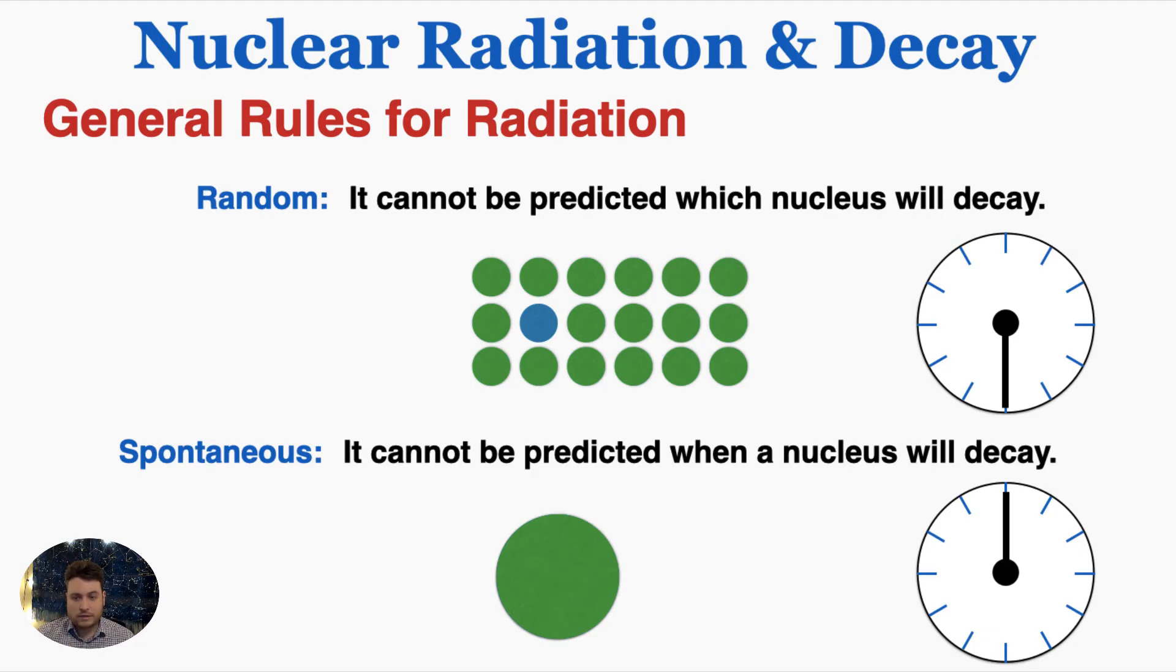Similarly, it can't be predicted when a nucleus will decay. If we started this clock, it could decay very early. But if we rewound the universe and started all over again, it could decay much later or not at all. So that's your introduction to nuclear radiation and decay.